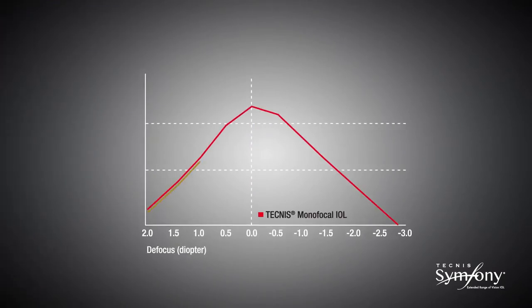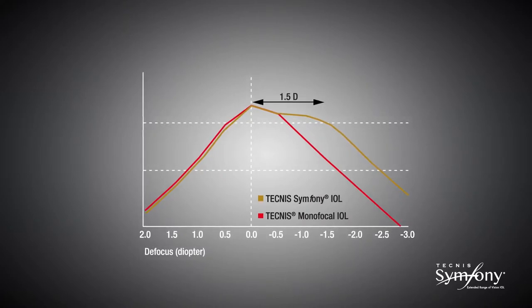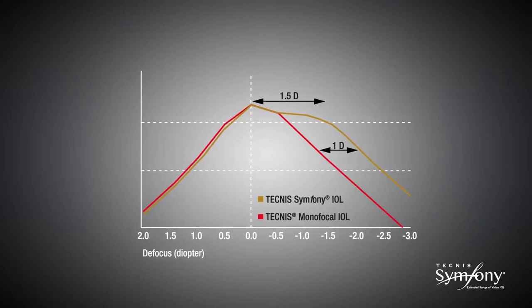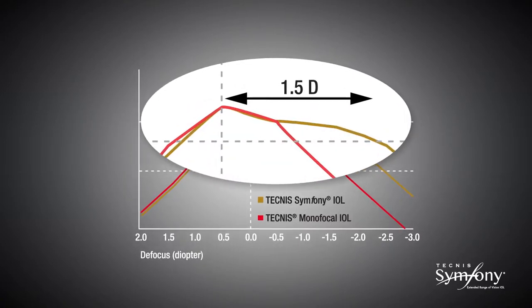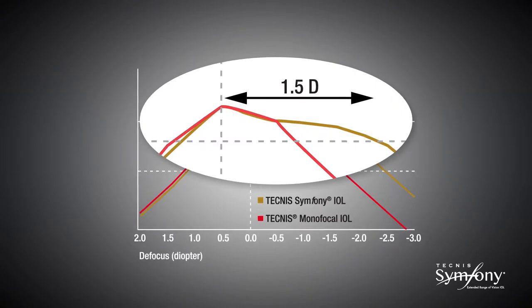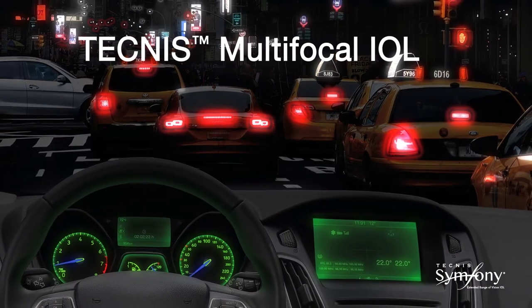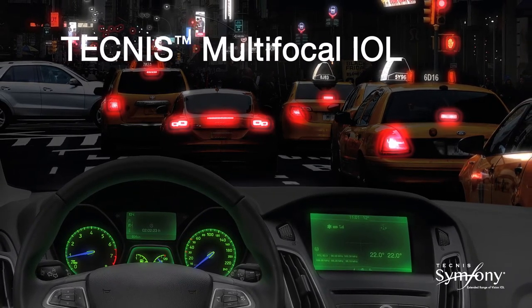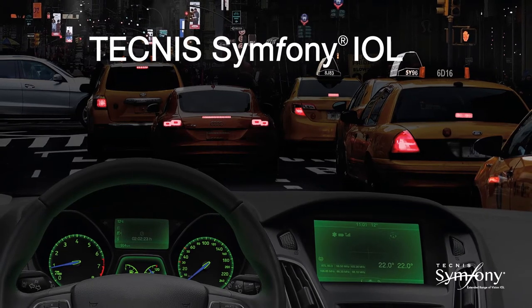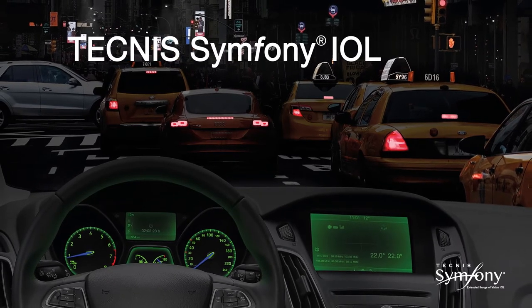Because of its elongated focus, the Technis Symphony IOL delivers high-quality vision through 1.5 diopters of defocus and an increase of 1 diopter range of vision throughout the defocus curve compared to a monofocal IOL. The plateau of the defocus curve demonstrates the extended range of vision of the Technis Symphony lens. In addition, because of the elongated focus, the Technis Symphony IOL does not have the distinct focal points of a multifocal IOL and, as such, does not have the distinct out-of-focus images that can lead to halo and glare. As a result, the incidence of nighttime halos and glare is low.